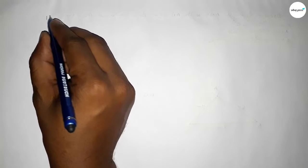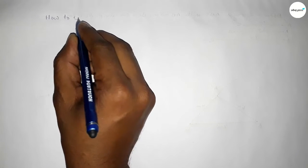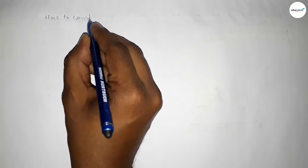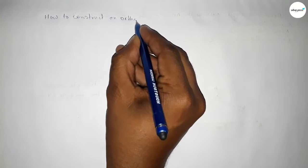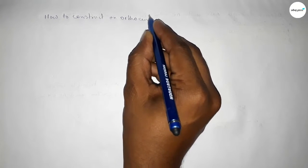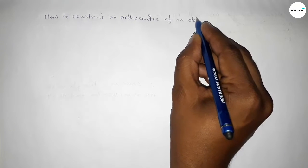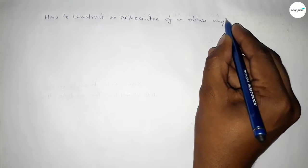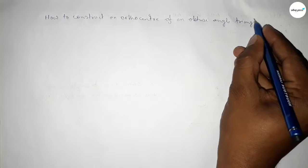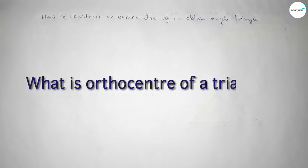Hi everyone, welcome to SI Share Classes. Today in this video we have to construct an orthocenter of an obtuse angle triangle by using a compass in an easy way, so let's start the video.